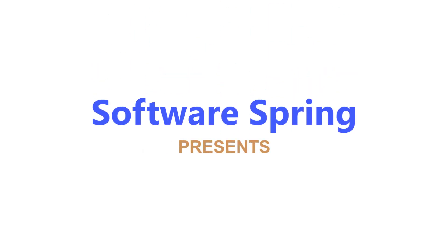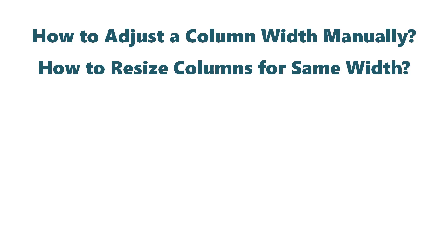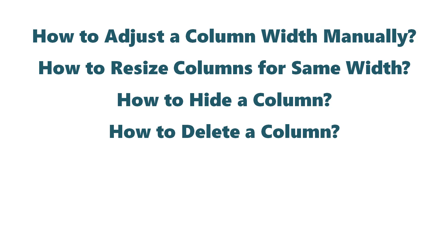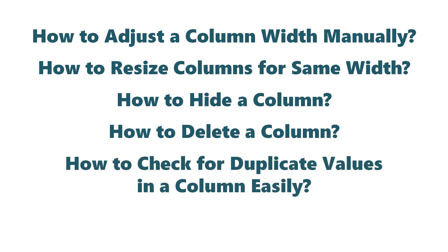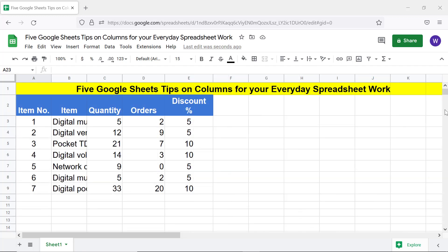Hello folks, greetings and welcome to this tutorial which gives 5 Google Sheets tips for your everyday spreadsheet work. These tips range from adjusting a column width manually to using the Column Stats option to check for duplicate data. Topics covered include: how to adjust a column width manually, how to resize columns to the same width, how to hide a column, how to delete a column, and how to check for duplicate values in a column.